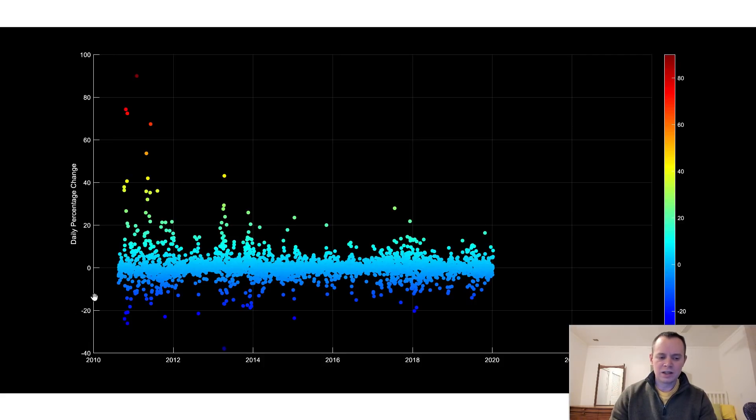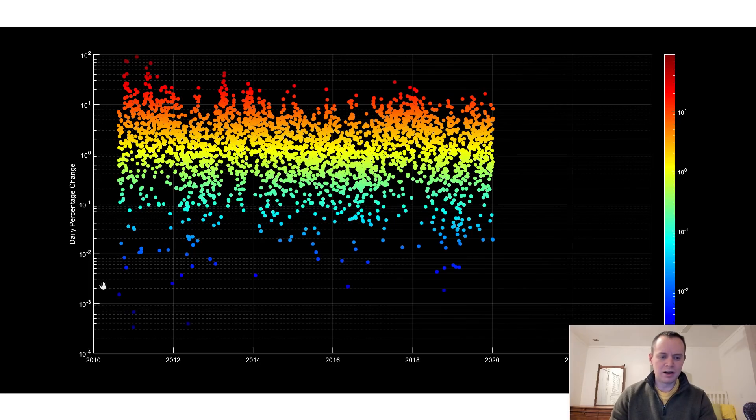So what we're going to do is we're just going to look at the absolute value of the percent change. So instead of looking at negative 20, negative 40, we're just going to be looking at the absolute value. So just the volatility and we don't care which way it goes. And we're also going to be looking at it on a log scale to try to expand the data points so we can see where they're falling.